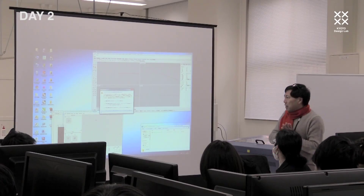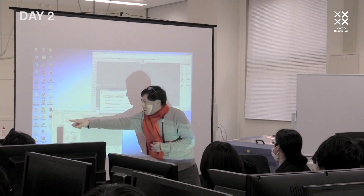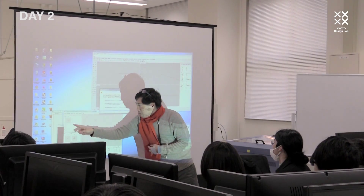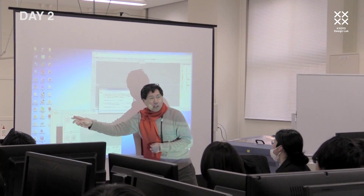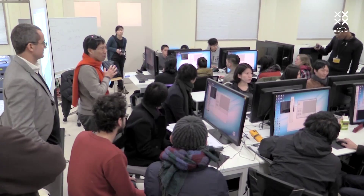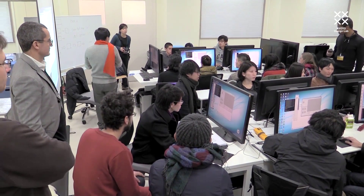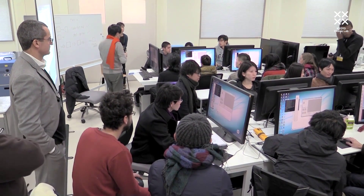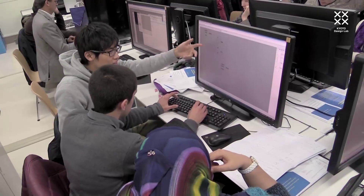We'll take a grammar — here's a grammar with one initial shape and two rules — and open Rhino, which should be on your desktop.